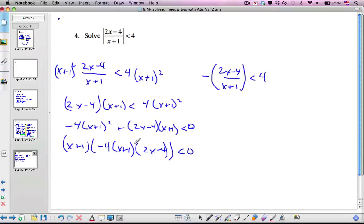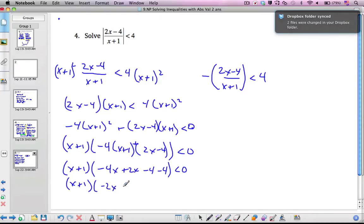Oh, I missed my plus sign in here. Collect like terms some more, x plus 1. And I get negative 4x plus 2x minus 4 minus 4 more. It's less than 0. So x plus 1 minus 2x minus 8 is bigger than or less than 0.